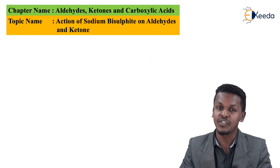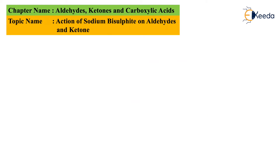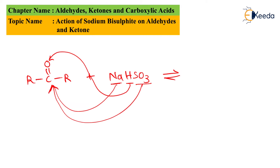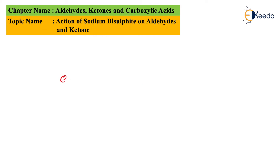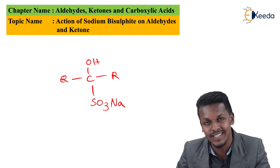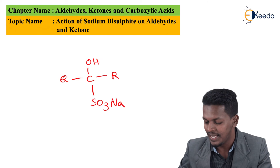Now for the reaction of ketone with sodium bisulfite: R-C(=O)-R reacts with NaHSO3. This reaction is also reversible and is very similar to the previous one. The H⁺ gets attached to the oxygen while the Na and SO3 both get attached to the carbon atom, giving a hydroxy sulfonic acid product, this time derived from the ketone.